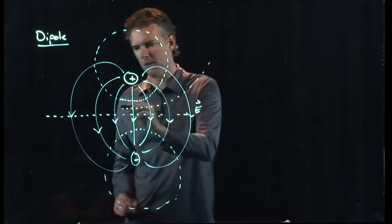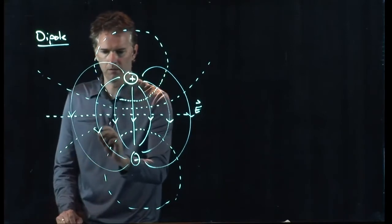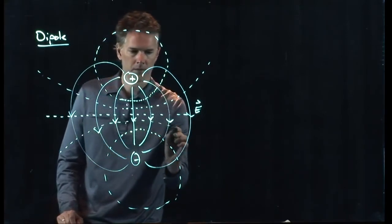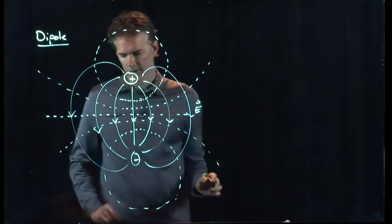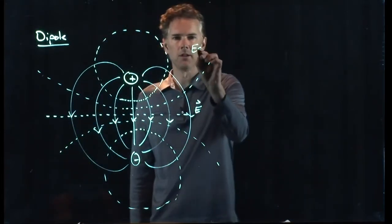There's going to be one that looks like this. There's going to be one that looks like this, and so forth. These are all equipotential surfaces, these dashed lines.